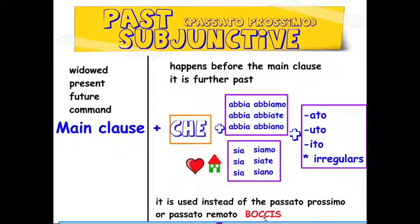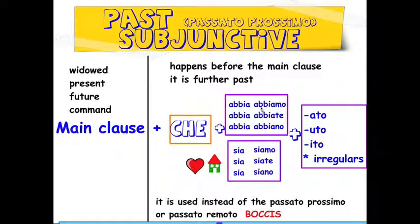So this is how you make the passato of the subjunctive. For example: io penso che lui sia andato a scuola. If it had been a girl: io penso che lei sia andata a scuola. Or: io penso che loro abbiano studiato. Fairly logical.